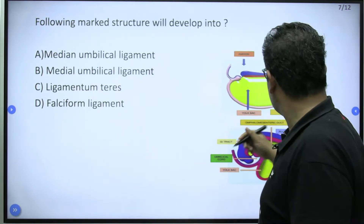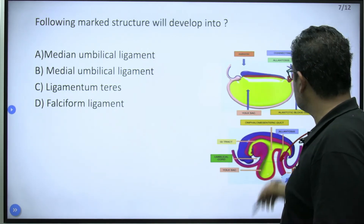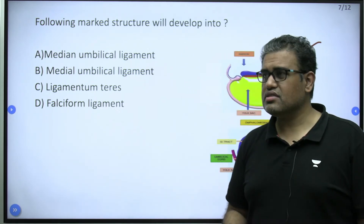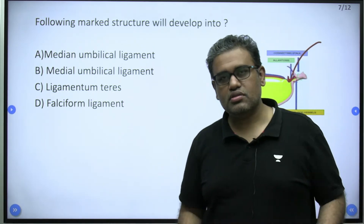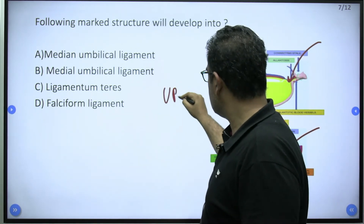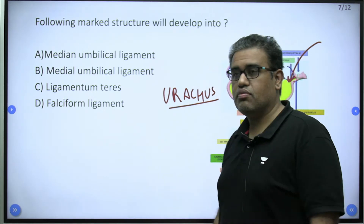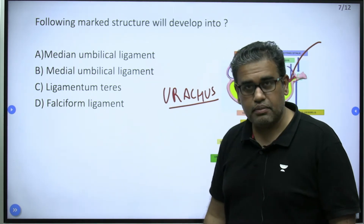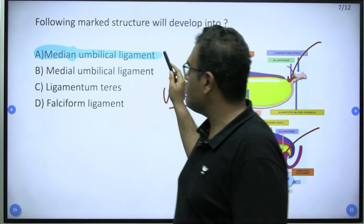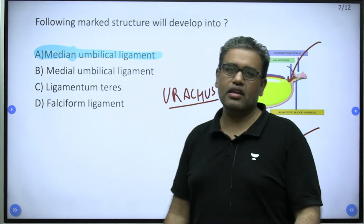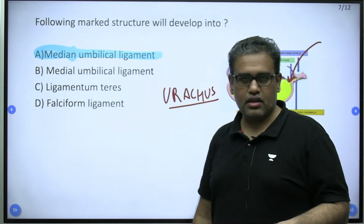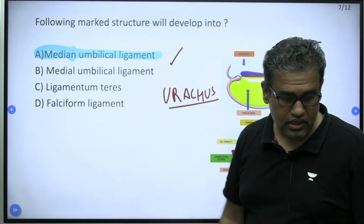The allantois was marked as an answer. This is basic embryology — the allantois gives rise to the urachus. Postnatally, the urachus develops into the median umbilical ligament. Note it is the median umbilical ligament — single and median. The medial umbilical ligament is from the umbilical artery, and the lateral one is from the inferior epigastric artery. This is a repeated question.